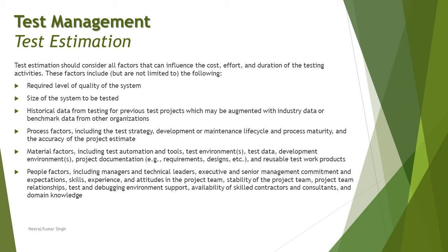Process factors play a vital role — what kind of process you are going to follow, including the strategy, development or maintenance life cycle, process maturity model of your organization, and the accuracy of the project estimate. You need to be aware of your tolerance for deviation. Material factors also matter, including test automation and tools, test environment, test data, development environment, project documentation, and reusable test work products. These documents support you during execution, but poor documentation can leave you without necessary information at critical moments.